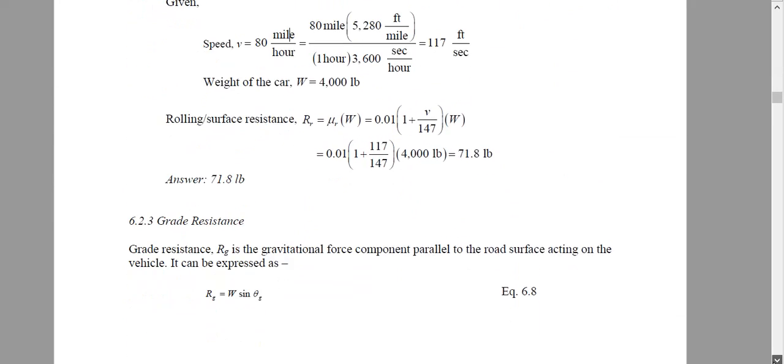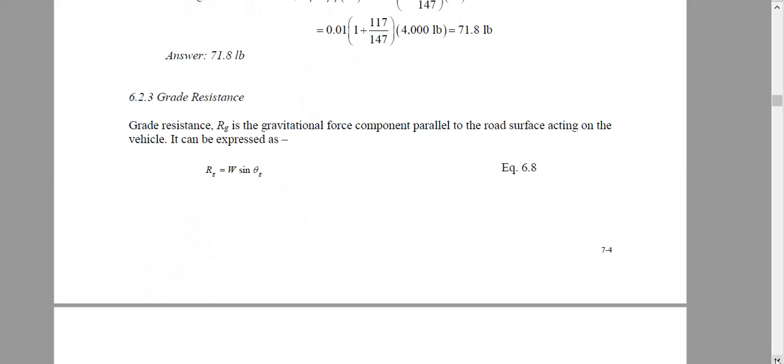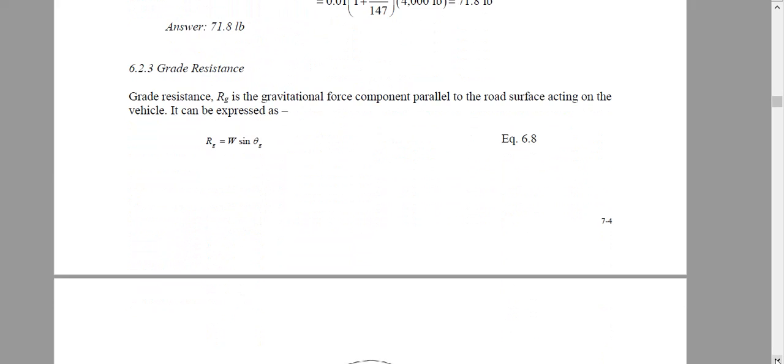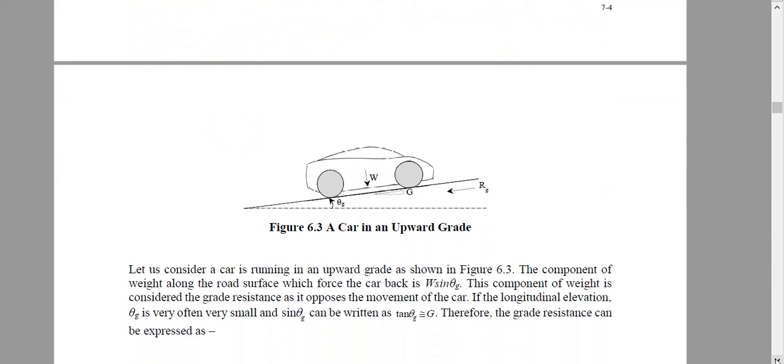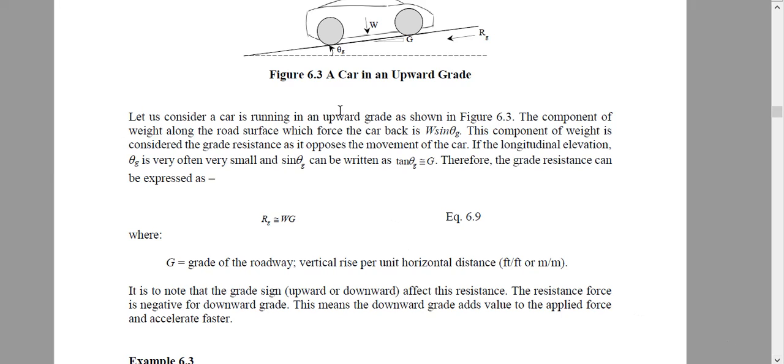For example, if angle is say 4 degree, sin 4 degree - the value of sin 4 degree is the same thing as the 4 degree in radian or even similar to the grade. Here they wrote: if longitudinal elevation theta G is very small, sin theta can be written as tan theta that is equal to the grade. Grade means just feet per feet or the slope. So 4 percent grade means if I go 100 I will rise 4. So 4 by 100 is the grade in decimal.